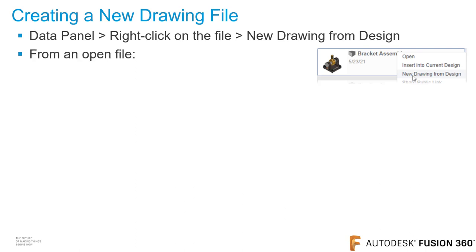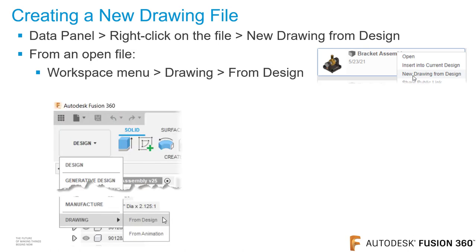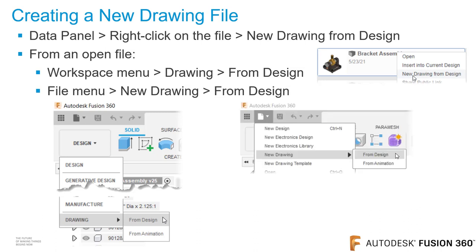For the next two methods, you can create a drawing from a file that is open inside of Fusion 360. For the second method, click on the Design drop-down arrow, and from the drawing area, click From Design. For the third method, click on the File menu, then click New Drawing, and from the menu, click From Design.